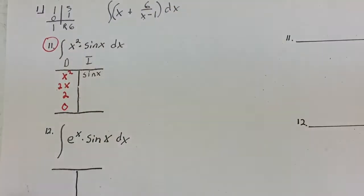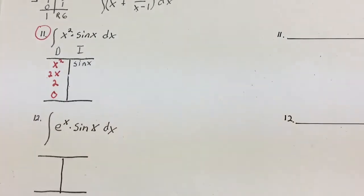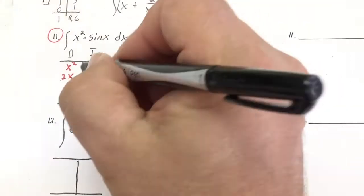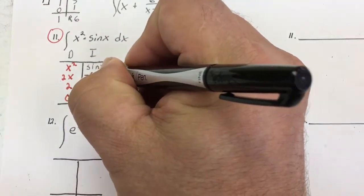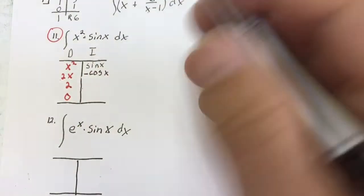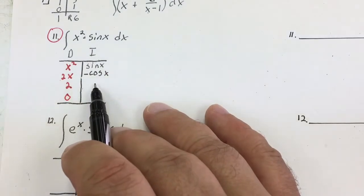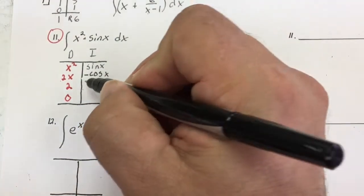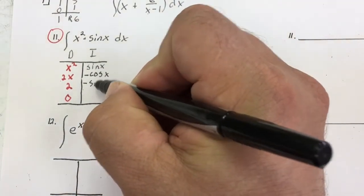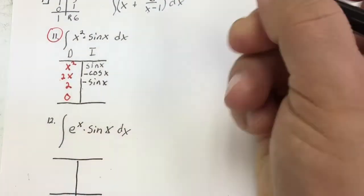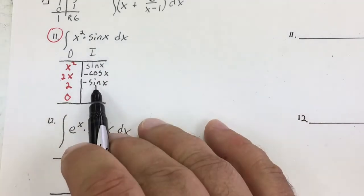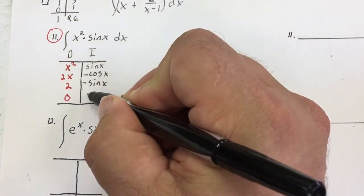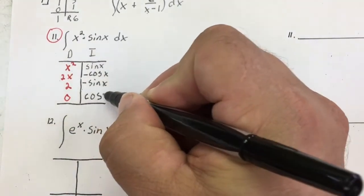Now I'm going to take the integral of sin(x). The antiderivative of sin(x), and I have to be careful, is negative cosine x. The antiderivative of negative cosine x is going to be negative sine x. And the antiderivative of sine x is negative cosine x, so negative negative gives me cosine x.